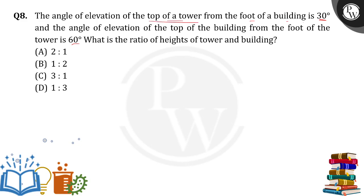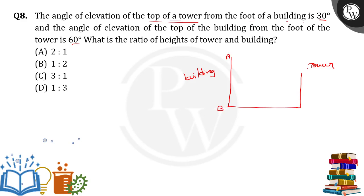So here, I am drawing the picture. This is the tower and there is a building. They both are on the same ground. AB is the height of the building and CD is the height of the tower. I am taking H as the height of the building, X as the height of the tower, and D as the distance between their feet.